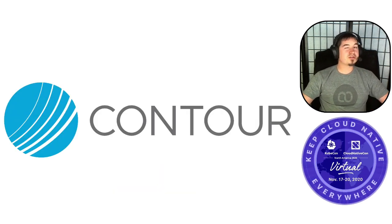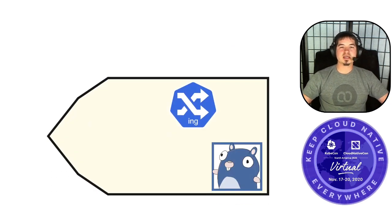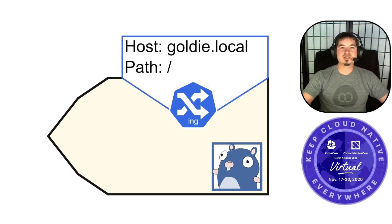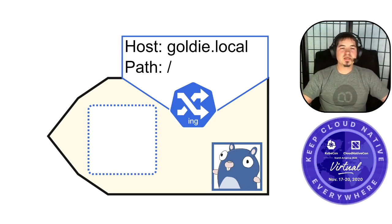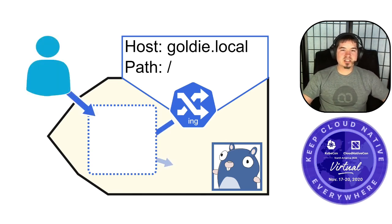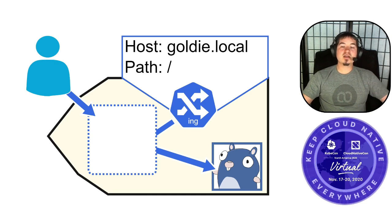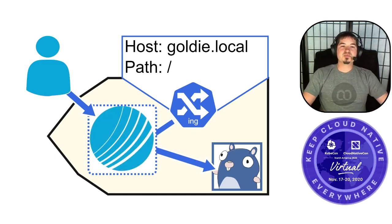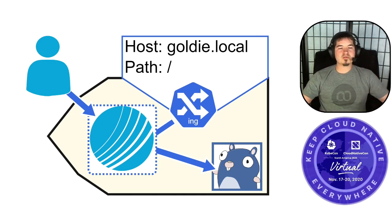Next is Contour, which fills another gap in the Kubernetes ecosystem. Kubernetes supports Ingress — configuration like host and path-based rules — but something has to receive user traffic, read that Ingress configuration, and route to the right place. That's called an Ingress controller. Many Ingress controllers are legacy web servers jammed into this role, but Contour is built from the ground up to be a cloud-native Ingress controller for Kubernetes, doing the right things right from the start.